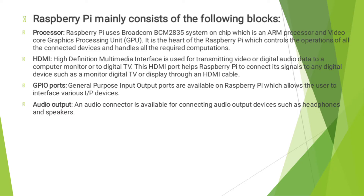The next block is HDMI — High Definition Multimedia Interface. It is used for transmitting video or digital audio data to a computer monitor or digital TV. This HDMI port helps Raspberry Pi to connect its signals to any digital device such as a monitor, digital TV, or display through an HDMI cable.